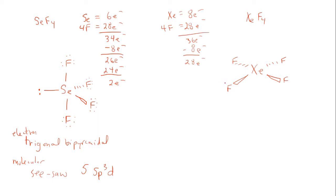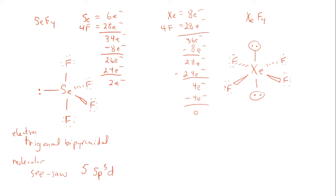We fill the valence shell for each fluorine, assigning twenty-four more electrons, leaving four electrons remaining. We can place those four electrons on xenon as two lone pairs, using all electrons with zero remaining.